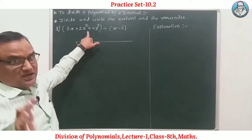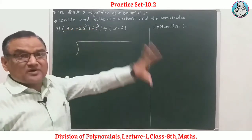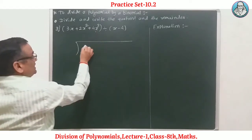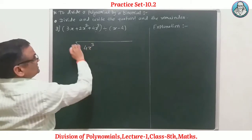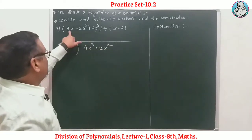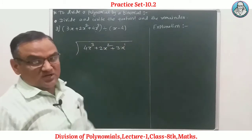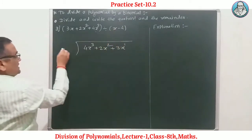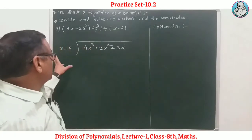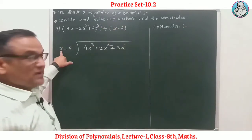Now example 3. The dividend must be written in descending order of the exponents. The dividend is 4x³ + 2x² + 3x and the divisor is x − 4. This is a trinomial divided by a binomial, which is the standard setup for this practice set.